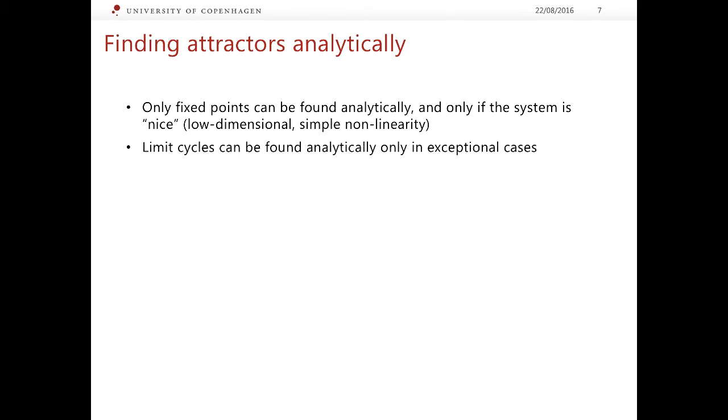What about limit cycles? Well, limit cycles can very rarely be found analytically, but most of the time they cannot be located analytically. And finally, torii and chaotic attractors cannot be found analytically at all. So, our options are a little bit limited. We can have a hope to find only fixed point attractors, so let us try to find a way to identify them.